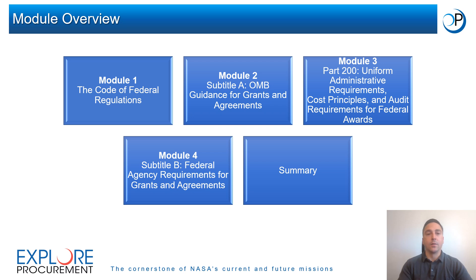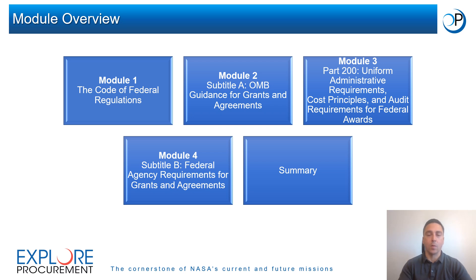This training is divided into four modules and a summary section. The modules are: 1. The Code of Federal Regulations, or CFR. 2. Subtitle A of the CFR, titled OMB Guidance for Grants and Agreements. 3. Part 200 of Subtitle A, Uniform Administrative Requirements, Cost Principles, and Audit Requirements. 4. Subtitle B, Federal Agency Requirements for Grants and Cooperative Agreements. The training concludes with a summary of lessons learned.